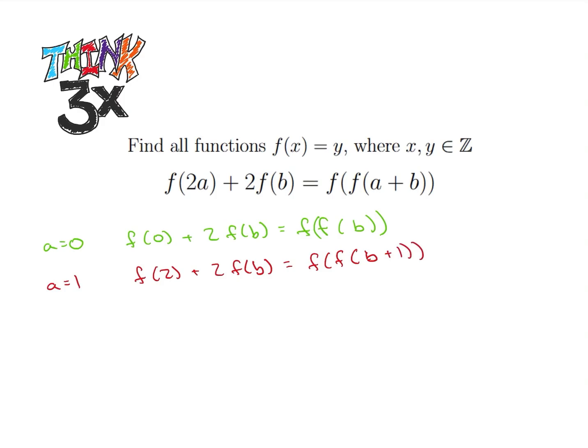So now I notice that in the first equation I had a equals 0, so let's look at a equals 0 again. But let's set b bar equal to b plus 1. So we're basically setting the b in our green equation equal to b plus 1. So then we can write our equation: f of 0 plus 2f of b plus 1 is equal to f of f of b plus 1. Because b was just an arbitrary variable, the green and purple equations are essentially the same equation.